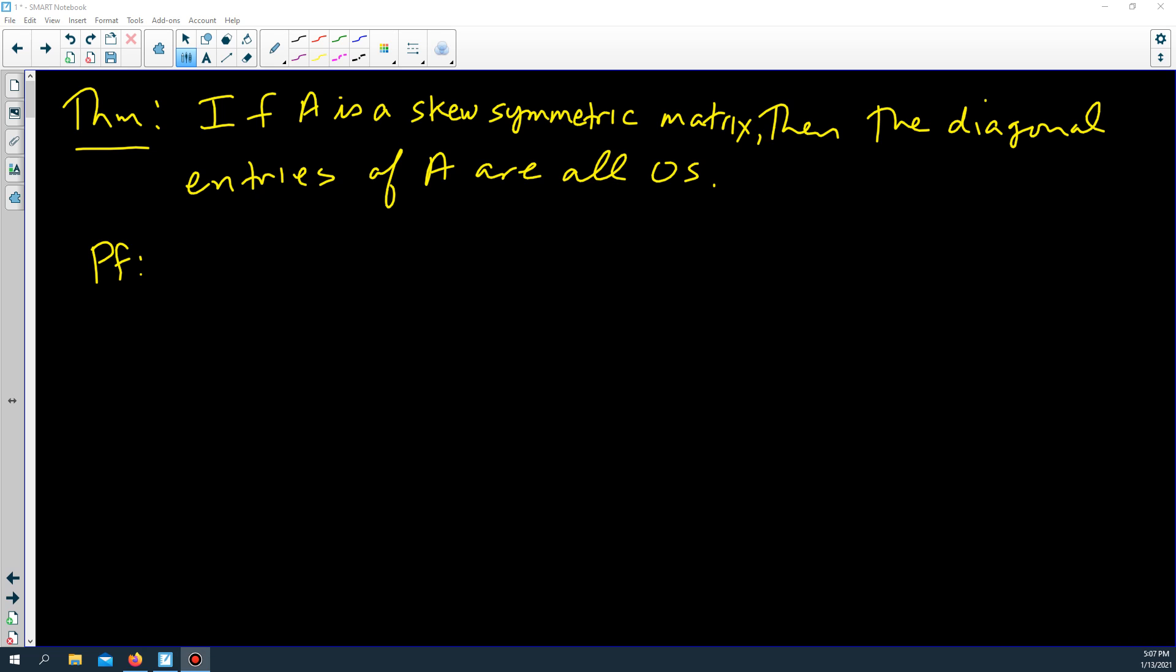In this video we're going to show that if A is a skew symmetric matrix, then the diagonals of A must be all zeros.